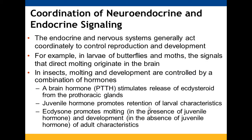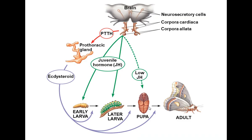An example of coordinating neuroendocrine and endocrine signaling is butterfly larvae. Molting signals originate in the brain, and both molting and development in insects are controlled by multiple hormones. Brain hormone PTTH stimulates the release of ecdysteroids from the prothoracic glands, while juvenile hormone promotes retention of larval characteristics. Ecdysone promotes molting when juvenile hormone is present and development into an adult when juvenile hormone is absent.